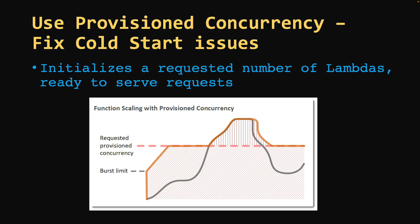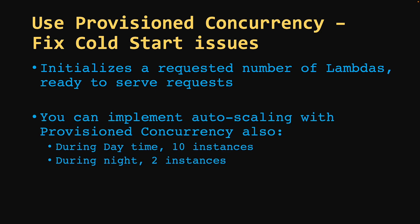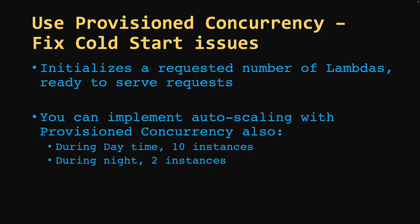For example, you can have 10 Lambda instances as part of provisioned concurrency and these 10 Lambdas will always be ready to respond. You can also implement auto scaling with provisioned concurrency, where you decide the number of instances based on your traffic. During daytime you might need 10 instances, and at night, when traffic is less, you can reduce instances to two. Note that with provisioned concurrency you are charged extra, so you should implement auto scaling if you have variable load at different times.